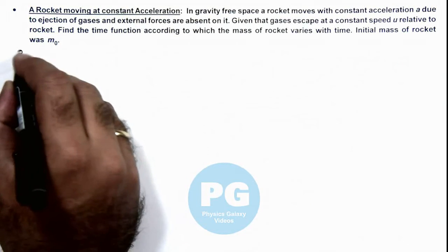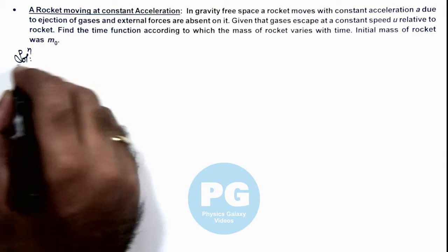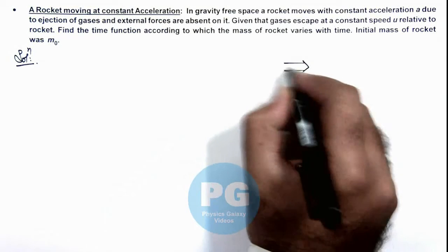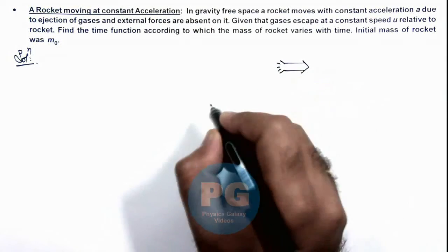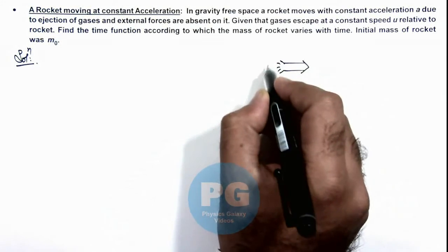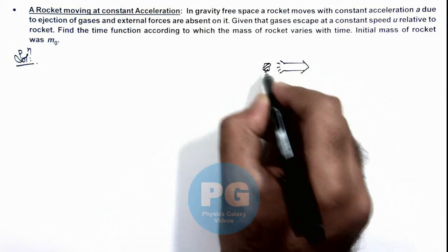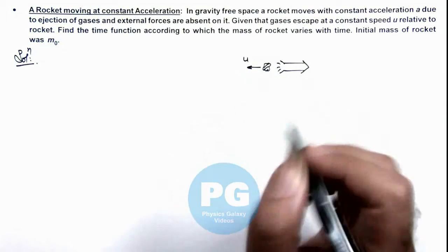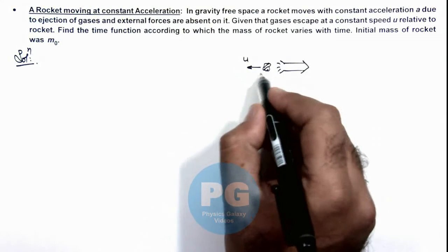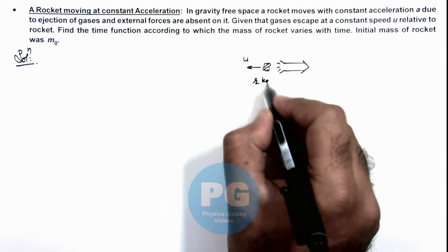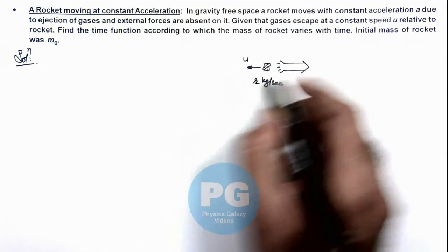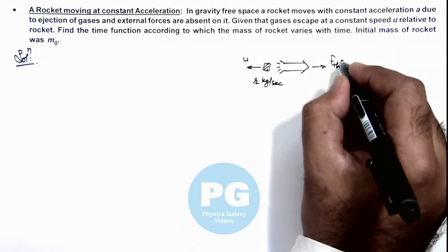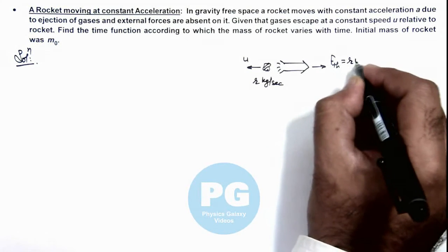In solution, at any instant if the rocket is ejecting gases at speed u relative to the rocket, and the lump of gases ejecting out is at rate r kg per second (the ejection rate), then the thrust acting on the rocket is r×u.